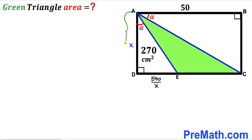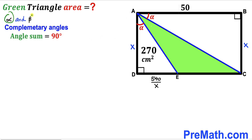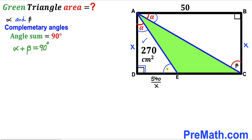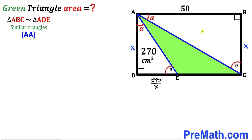Now let's make an observation: side AD equals side BC, so if AD is X then BC is X as well. Next, let's assume alpha and beta are complementary angles, meaning alpha + beta = 90°. In triangle ABC, we have angle alpha and a 90° angle, so the remaining angle must be beta. Similarly in triangle ADE, we have angle alpha and 90°, so that angle is also beta.